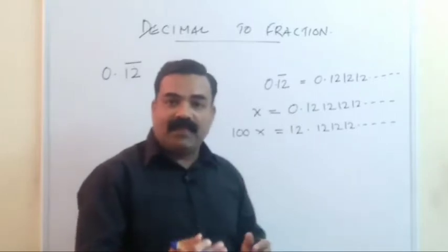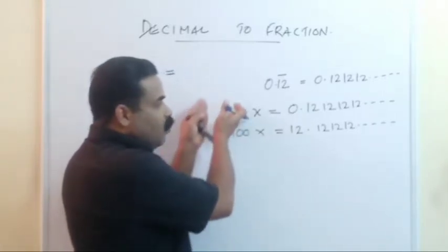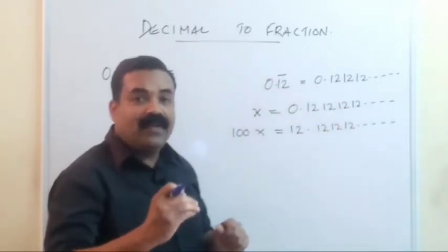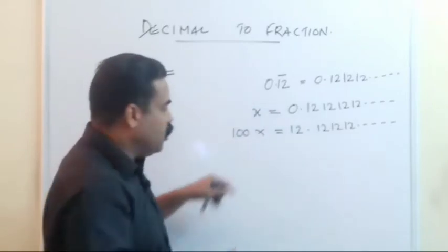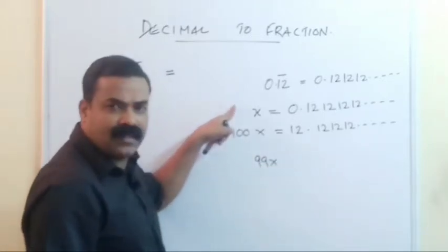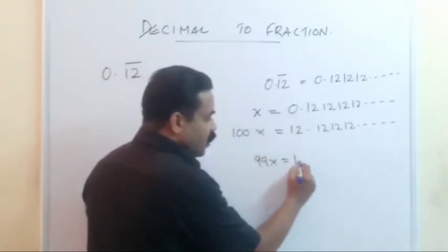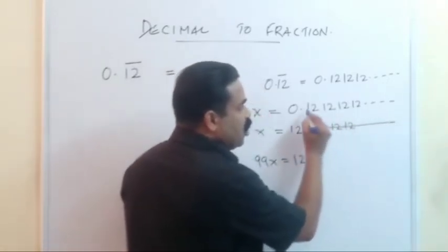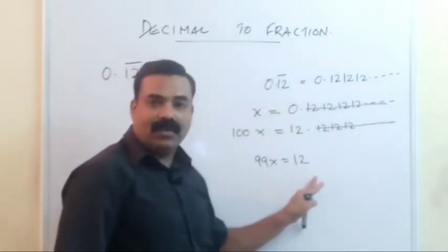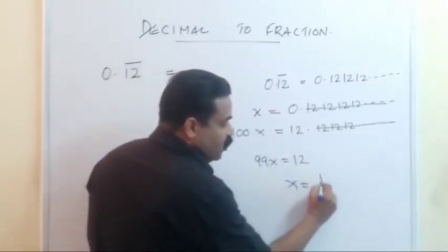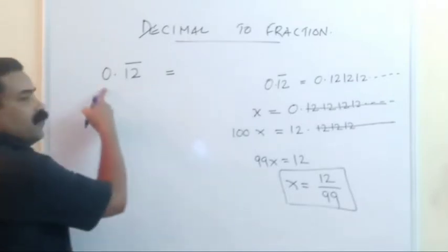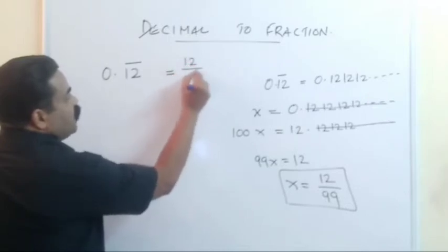The next step: subtract the first equation from the second. 100x minus x gives 99x. On the right side, 12.12121212 minus 0.12121212 — everything after the decimal cancels, leaving 12. So 99x = 12, which means x = 12/99. Since x was our given number 0.12 bar, this decimal can be expressed as the fraction 12/99.